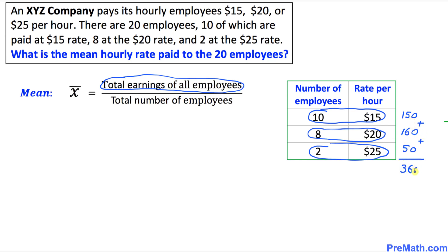360 dollars divided by total number of employees. We know that the total employees are 20, so we are going to divide by 20. That means our average x̄ turns out to be 18. Our answer is $18 per hour. Thus, our mean hourly rate turns out to be $18.